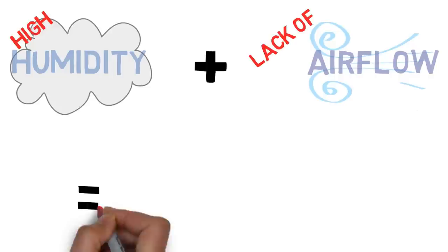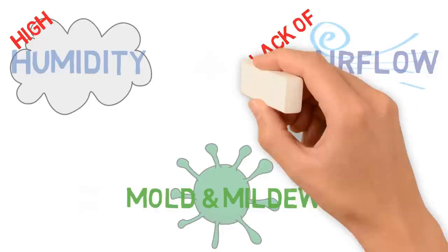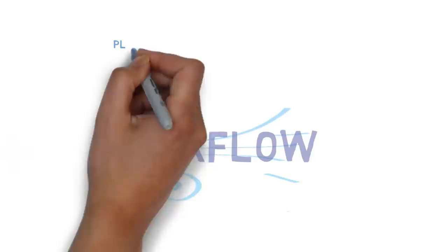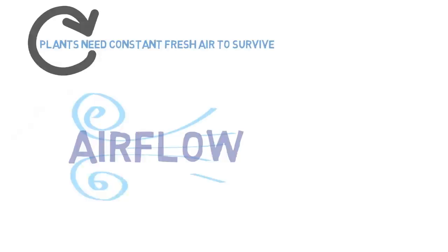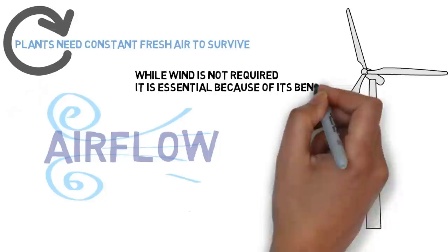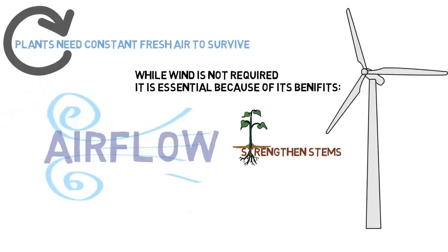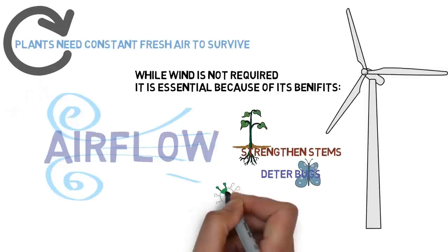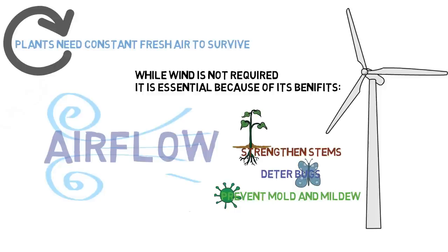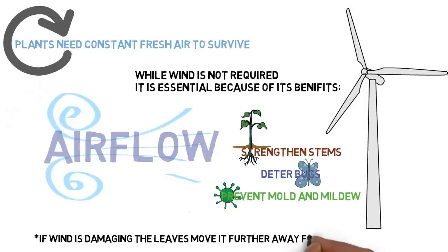Airflow is pretty simple and straightforward. All plants need is a constant fresh air supply, though constant wind isn't technically required. However, a good breeze is a necessity for any grow due to the many biotic problems it prevents, as well as strengthening stems. Strong wind will prevent bugs, mold, and mildew from settling on the plant. There is such a thing as too much wind — it can cause leaves to claw downward — but just tone it back a little if that happens.